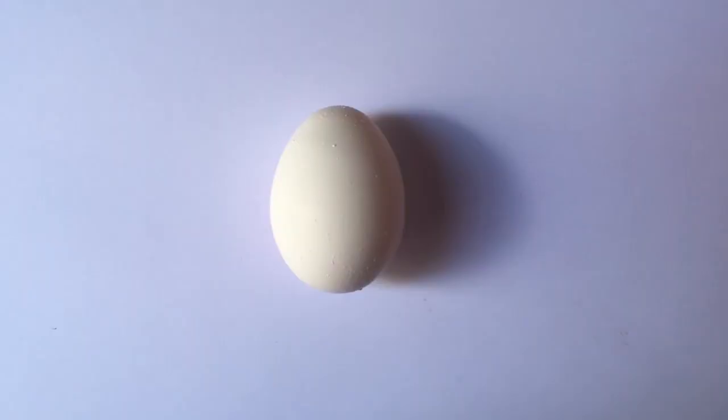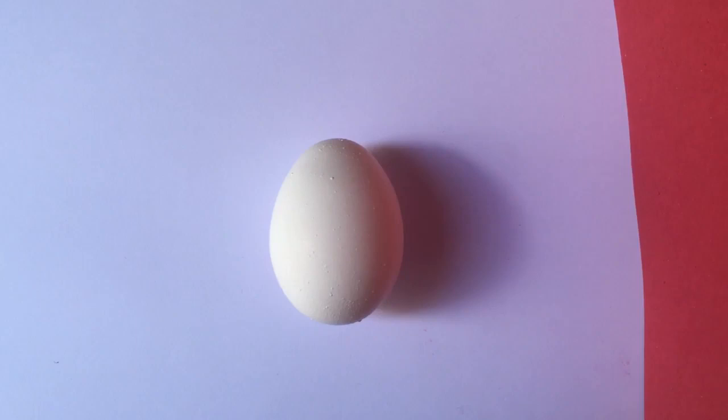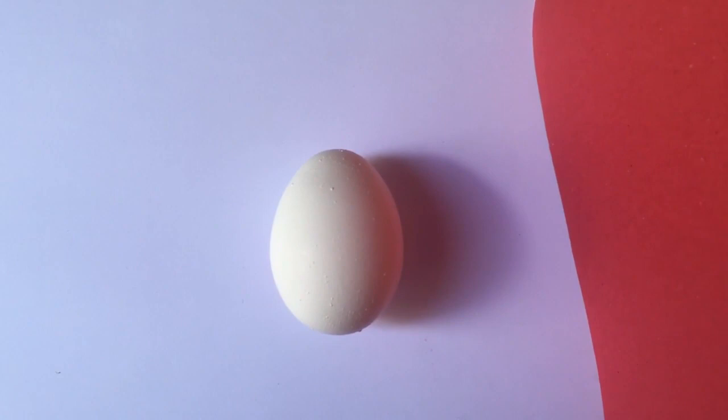Remember we talked about light hitting surfaces and bouncing around? All this bouncing and reflecting light means that colors are bouncing around and being reflected too. Watch this! I'm going to take this red paper and hold it up next to my egg. The light coming in from the left is bouncing off the red paper and reflecting onto my egg. It's changing the color of the egg and the color of the shadow. We can try that with any color paper.